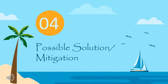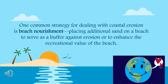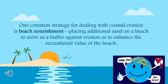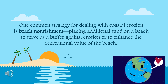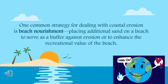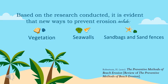There are possible solutions and mitigation strategies for preventing coastal erosion. One common strategy is beach nourishment — placing additional sand on a beach to serve as a buffer against erosion or to enhance the recreational value of the beach. Based on research conducted, new ways to prevent erosion include planting, building seawalls, and making sandbags and sand fences, according to the preventive methods of beach erosion studied by Robertson, 2010.